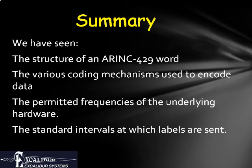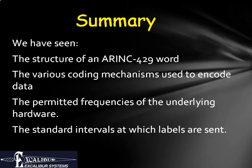We have now seen what each of the 32 bits in an ARINC 429 word is used for. We have also looked at what binary, binary coded decimal, discrete, and ASCII coding are used for. We have discussed low speed and high speed transmission and discussed the intervals at which ARINC words are transmitted. You now have enough background to read the ARINC 429 specification or a specification provided by an equipment manufacturer to start working. Good luck, and let us know if we can be of any assistance.